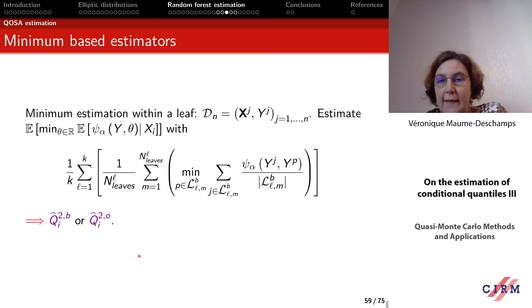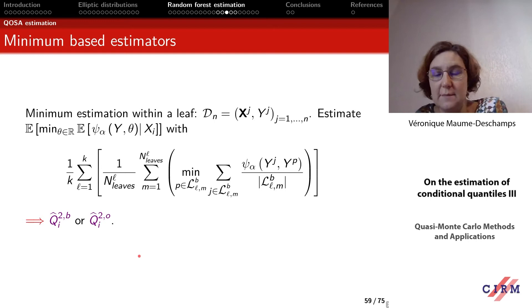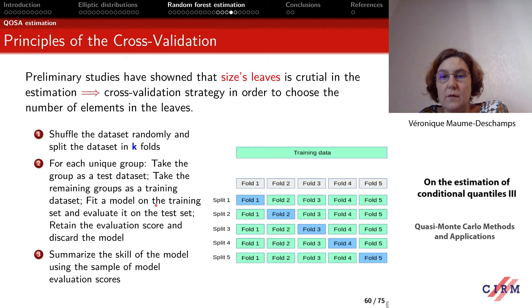So finally we have eight estimators in total: four which are quantile-based estimators, and four which are minimum-based estimators — each time we have a bootstrapped estimator and an original-sample estimator. Now I am going to show you some simulations to see which are the best estimators.